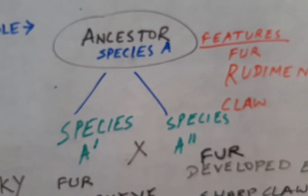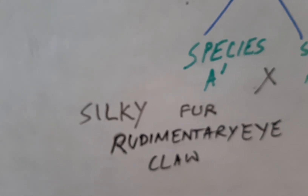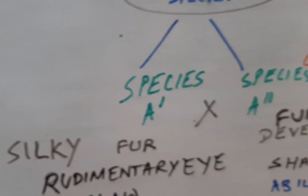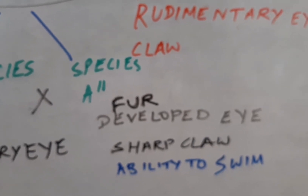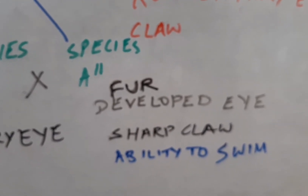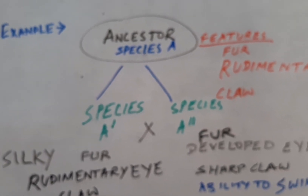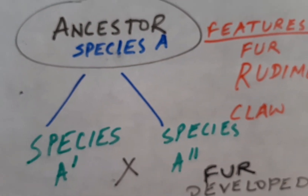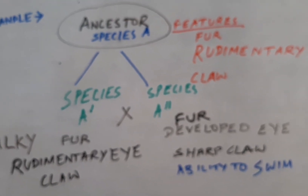Species A' has most of the common characters of the ancestor — claws and rudimentary eyes are the same — but the fur has changed to silky fur. Species A'' retains the same fur as the old species, but the eyes are developed (not rudimentary), the claws are sharp, and a new feature has developed: the ability to swing. This shows how new species came into existence. Nature selects the organism better fitted to cope with environmental changes, and it survives — this is natural selection.